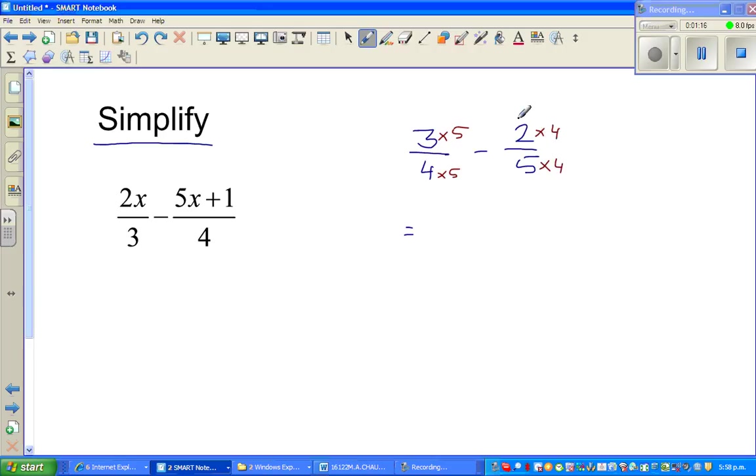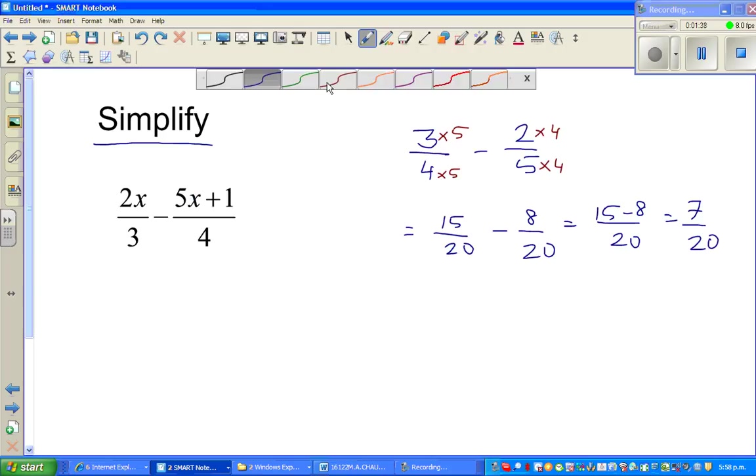So this becomes 15 over 20 minus 8 out of 20. Then you can go 15 take away 8 out of 20, which is 7 out of 20. This is how you simplify fractions. The same logic applies even to rational expressions, no different than what we saw here.